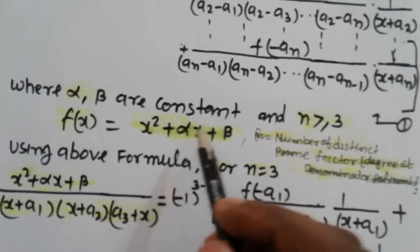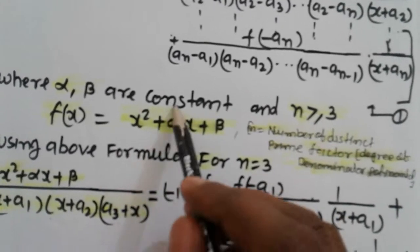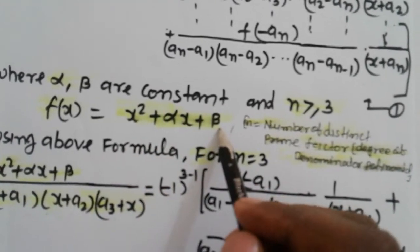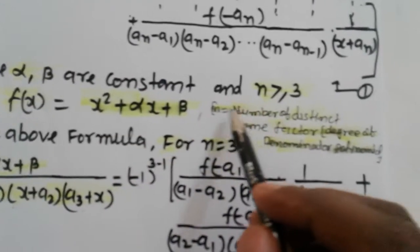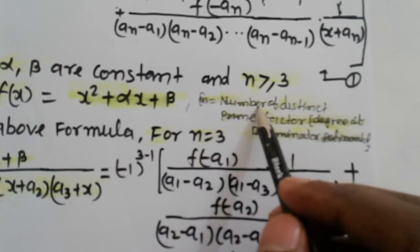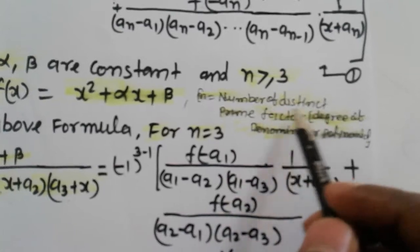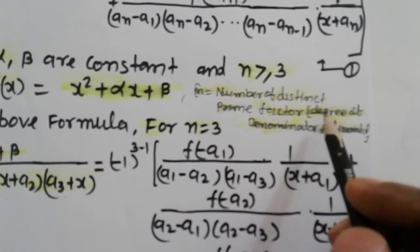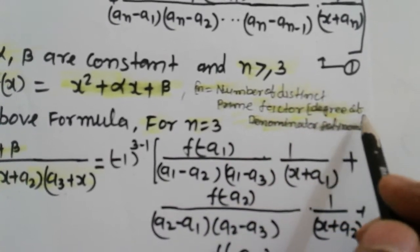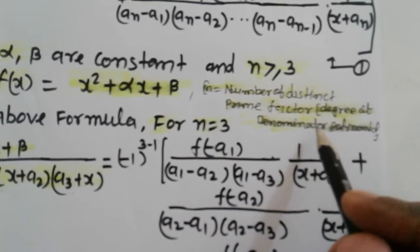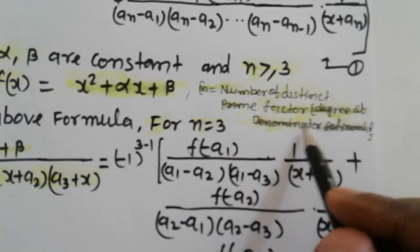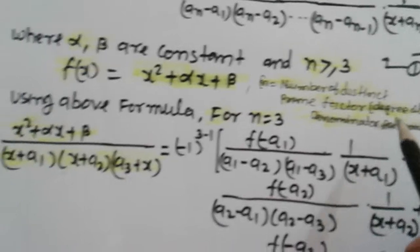Here f of x is equal to the numerator term x squared plus alpha x plus beta. And n is equal to the number of distinct prime factors, or the degree of the denominator polynomial.